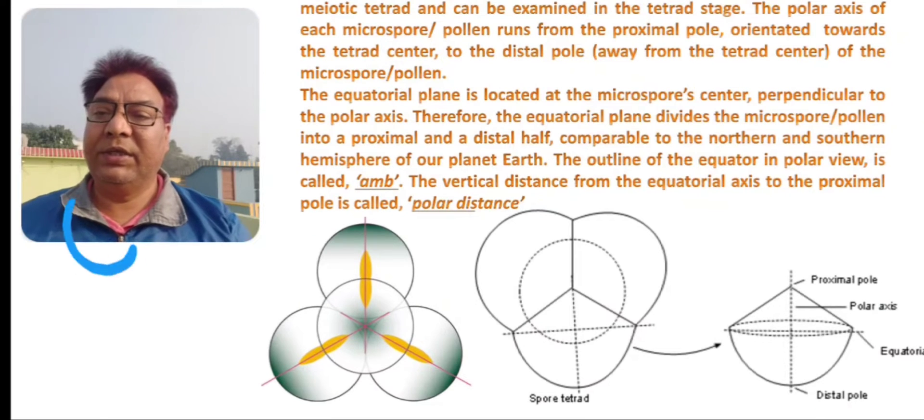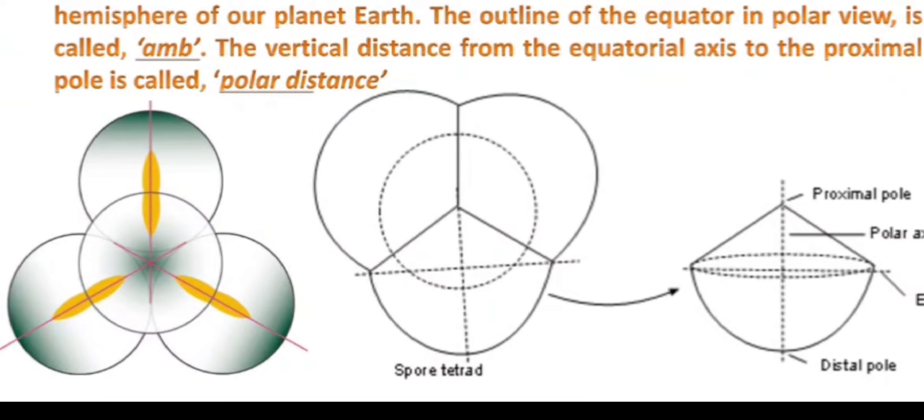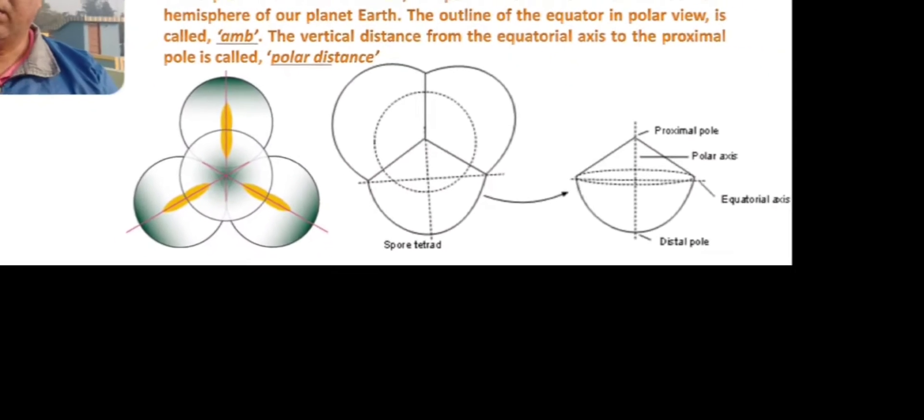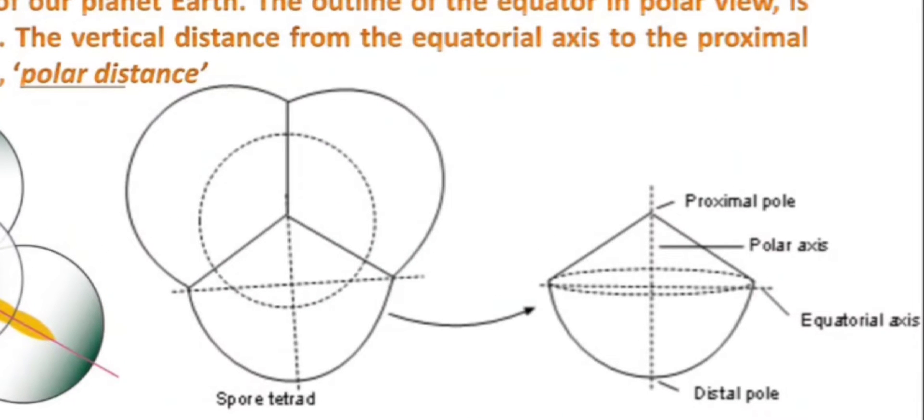These poles are decided on the basis of their arrangement during tetrad stage. In the tetrahedral tetrad, all the four pollen grains are attached at a certain point in the middle. That attachment area is the proximal pole for each of these grains. The pole exactly opposite to that will be the distal pole.